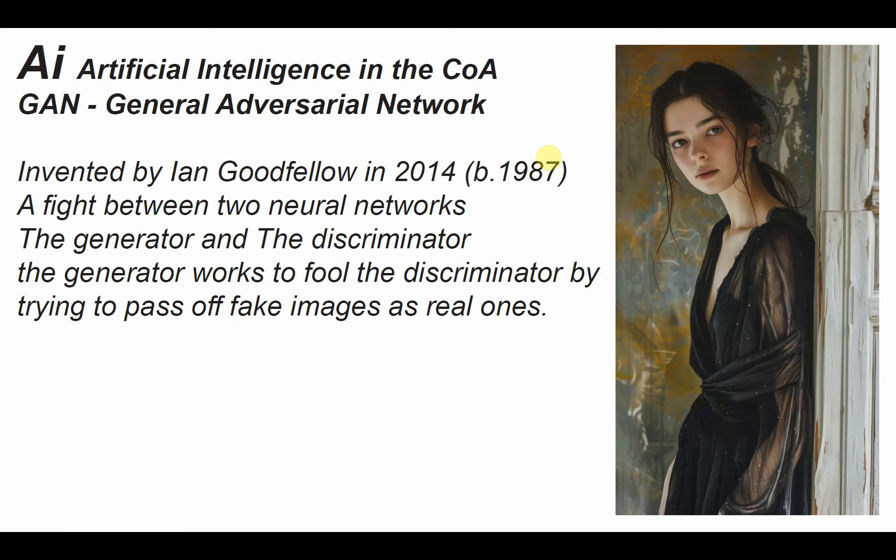More recently, in 2014, GANs were invented. Generative adversarial networks are what is behind the term generative AI. GANs are made up of two neural networks: the generator and the discriminator. The goal of the generator is to fool the discriminator. By doing this, the generator trains itself at generating results that pass as being generated by humans.